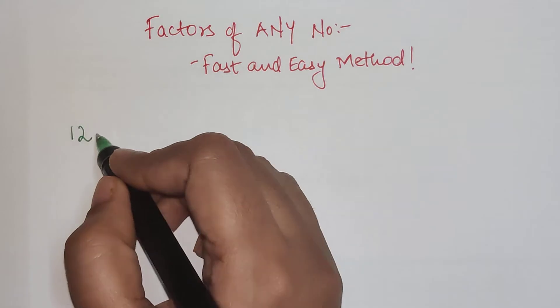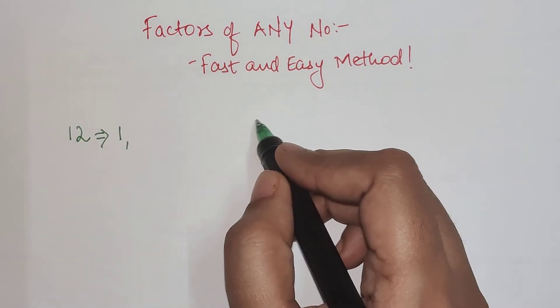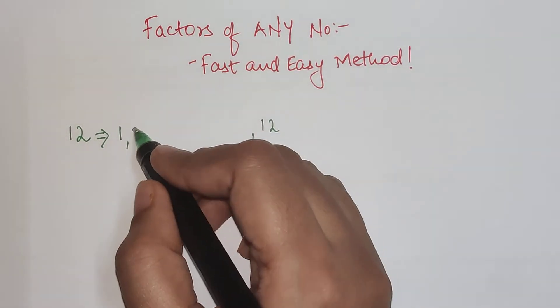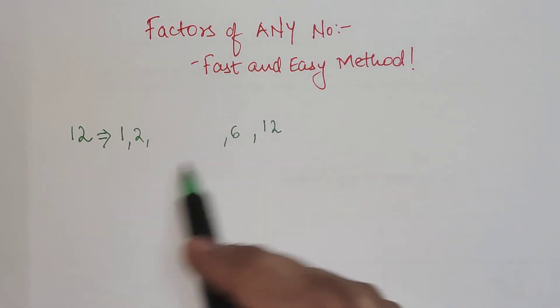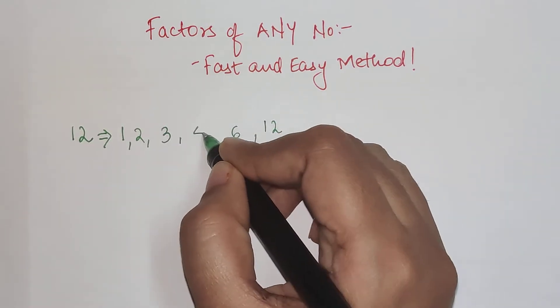If you had to find the factor of the number 12, what we know is that 1 divides 12 completely so 1 and 12 are the factors. Then we know that 2 and 6 because this is an even number. 2 into 6 gets you 12. Then the next number will be 3 and 4.